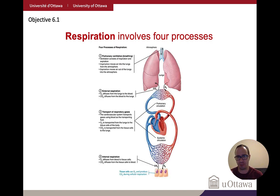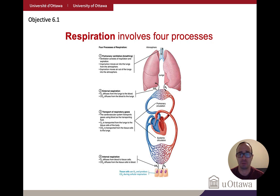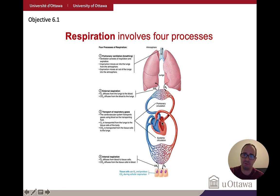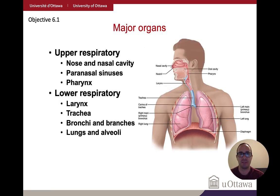To summarize: pulmonary ventilation is breathing, involving both inspiration and expiration. External respiration moves gases into the blood vessels. Transport occurs through the circulatory system. And internal respiration is the last stage, bringing things directly to the tissues or taking things out of the tissues. The major organs divide the respiratory system into the upper and lower respiratory systems.